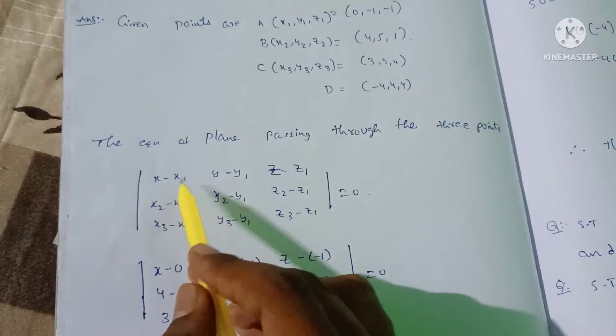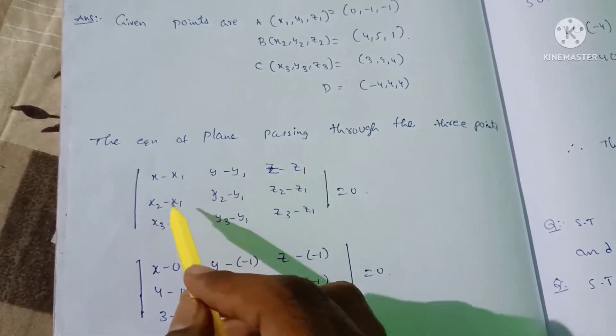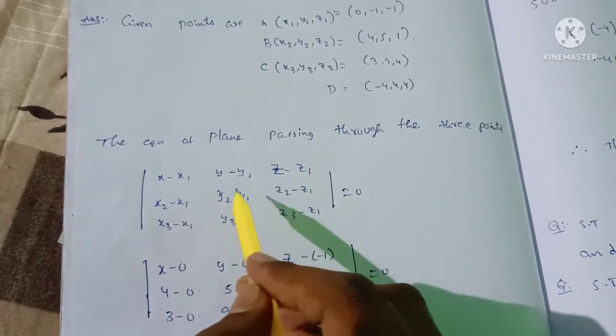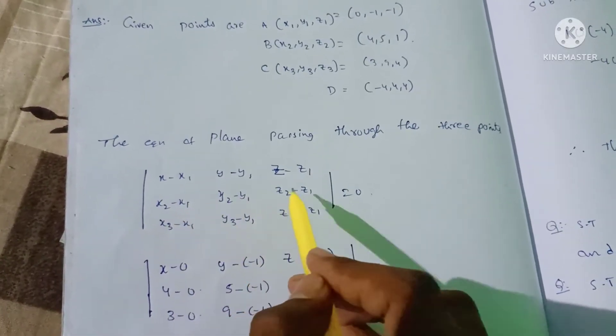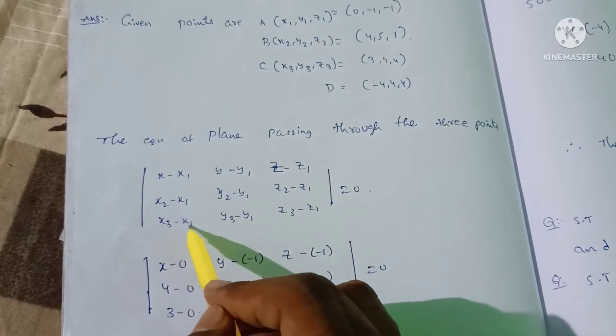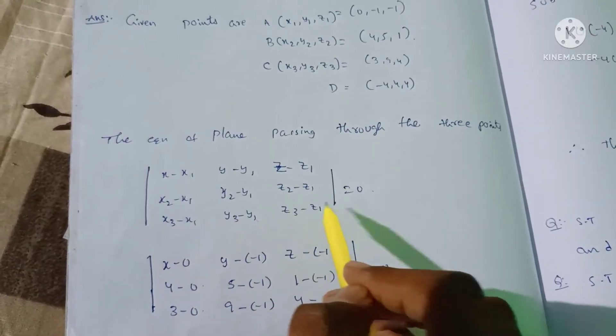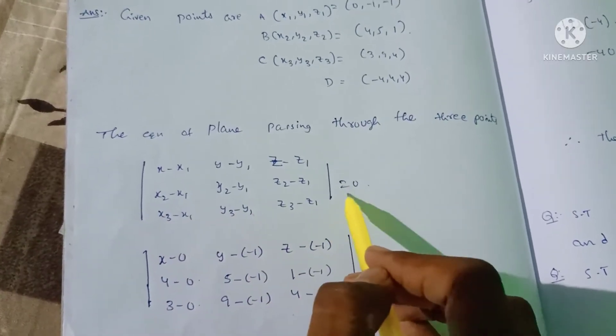The equation of a plane passing through 3 points is given by the determinant: | (x-x1), (y-y1), (z-z1) | | (x2-x1), (y2-y1), (z2-z1) | | (x3-x1), (y3-y1), (z3-z1) | = 0.